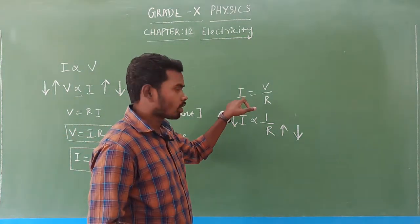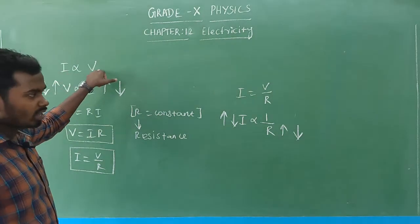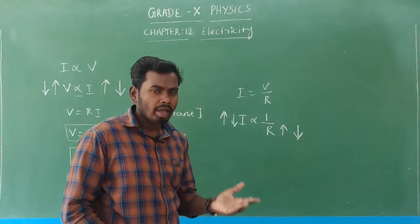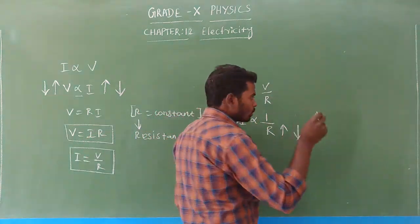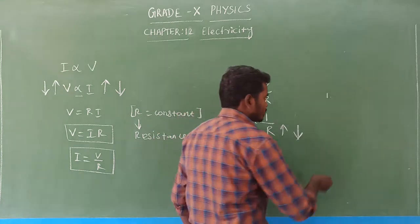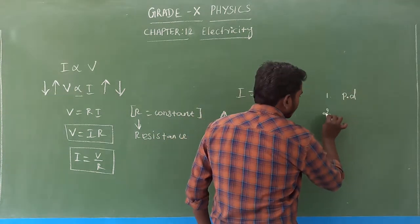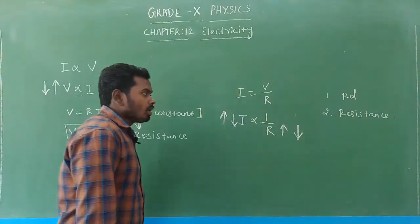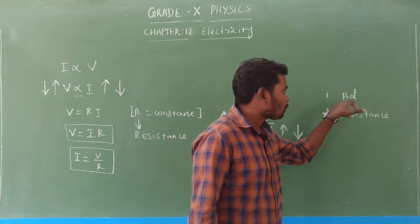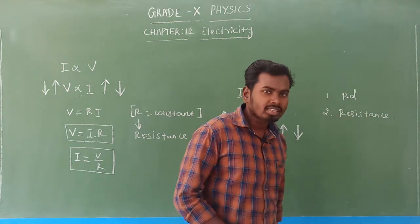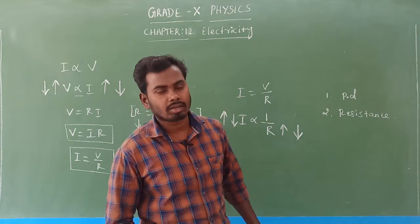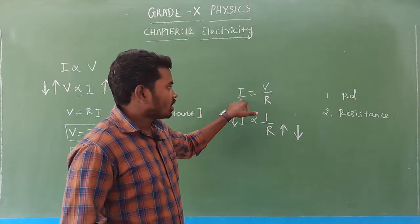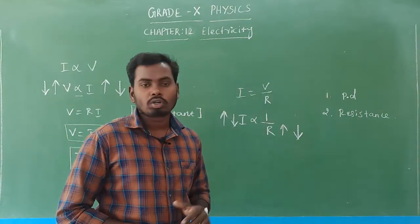The current flowing through a circuit is dependent on two factors. First, I is directly proportional to V — that is potential difference. Second, I is inversely proportional to R — that is resistance. So the strength of a current depends on the potential difference across the two terminals and the resistance of the conductor.